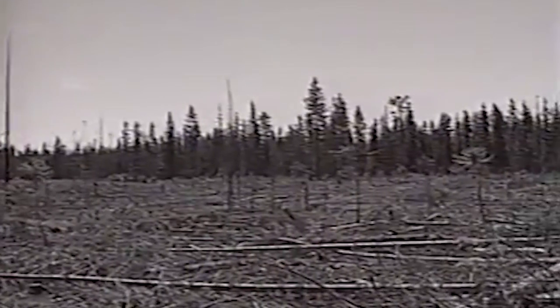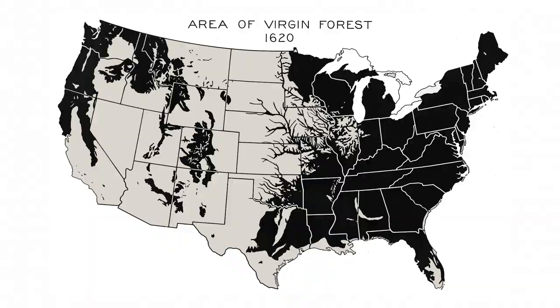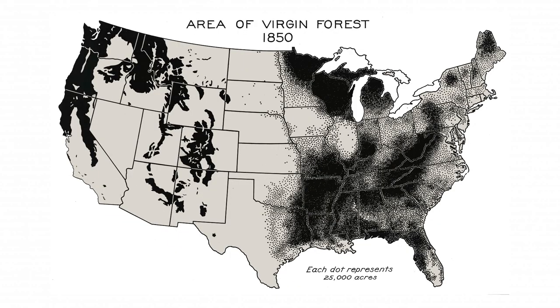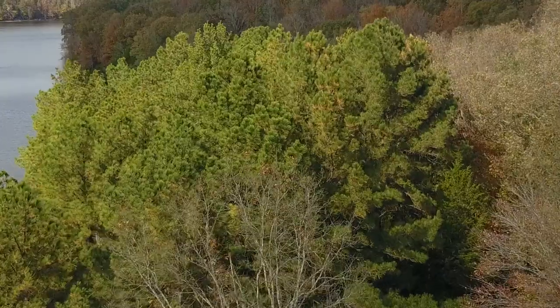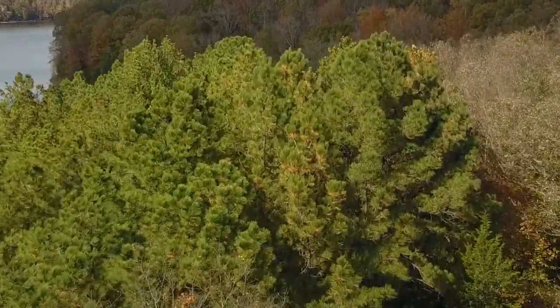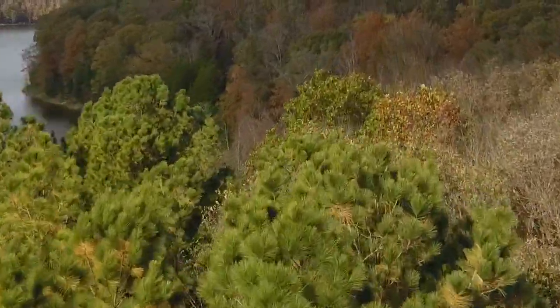Forests were the first victims, decimated for building materials and to clear land for agriculture. In the United States' developing years, approximately one to two hectares of land was cultivated for every person added to the population. Other habitat, such as wetlands and plains, soon followed.